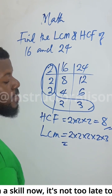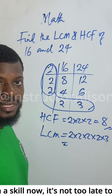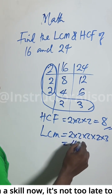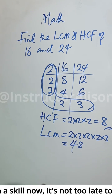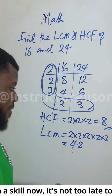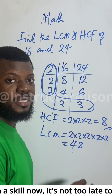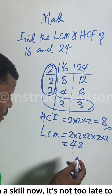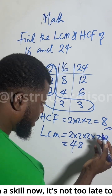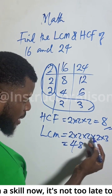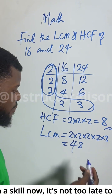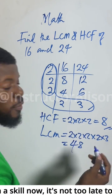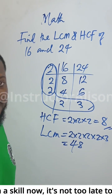Sixteen times three is 48 — that's the answer. Let's check: two times six is twelve, two times twelve is twenty-four, two times twenty-four is forty-eight. So 48 is confirmed as the LCM of 16 and 24.